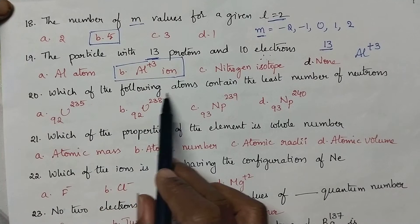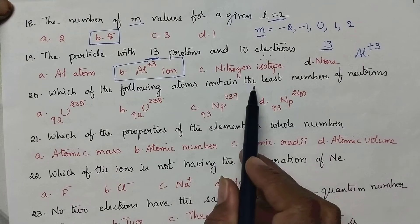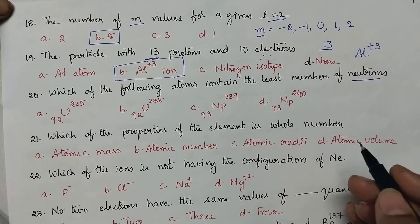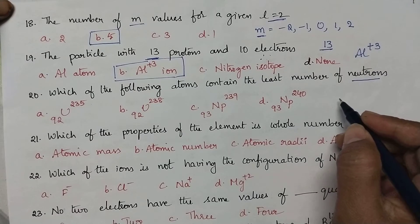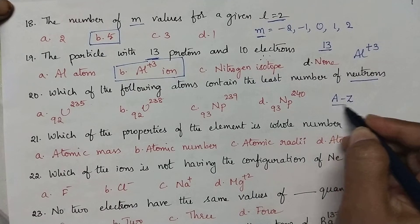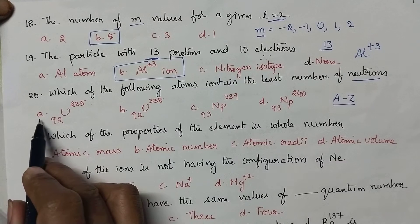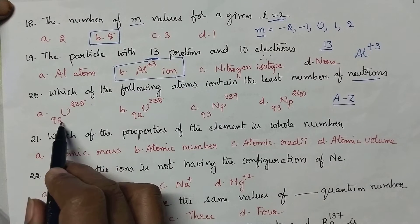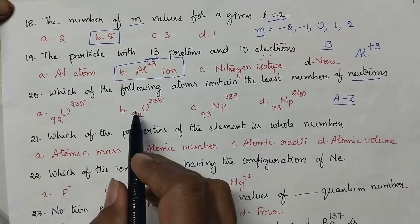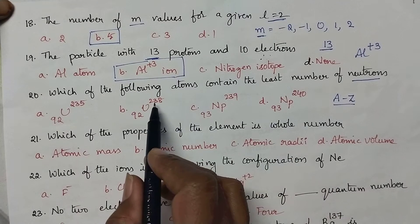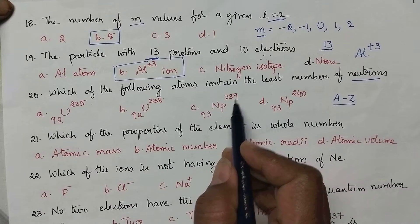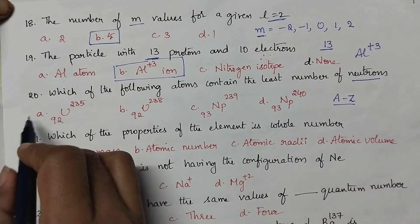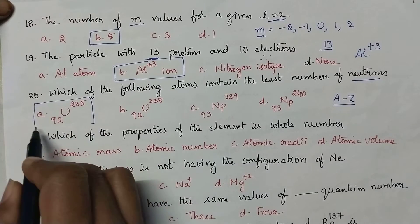Which of the following atoms contains the least number of neutrons: while calculating the number of neutrons, we have to calculate A minus Z value. In the case of option A, A minus Z is equal to 235 minus 92. In the remaining cases it is 238 minus 92, 239 minus 93, and 240 minus 93. So option A is the right answer.